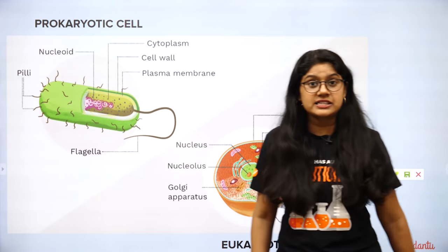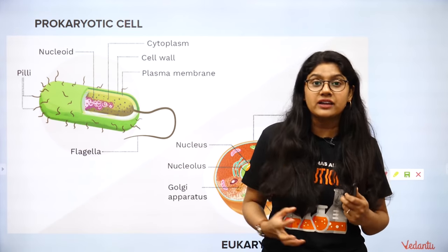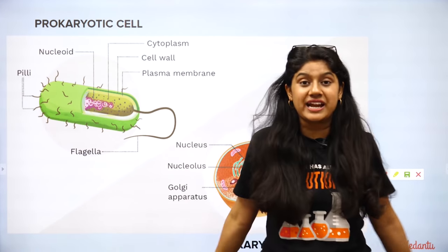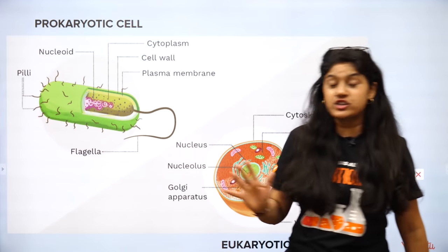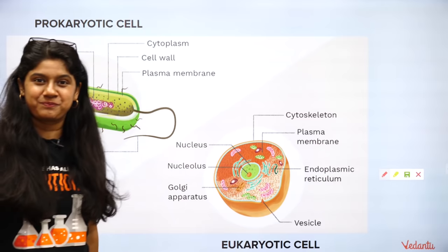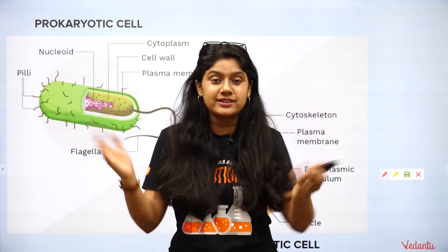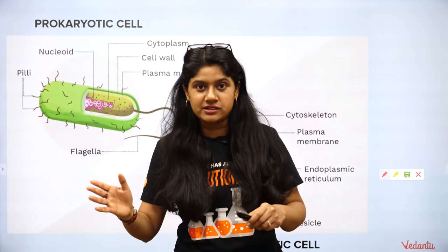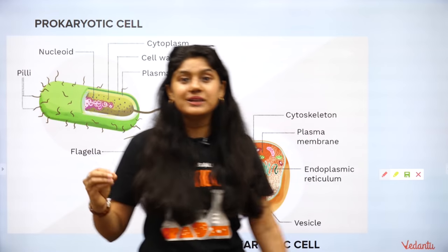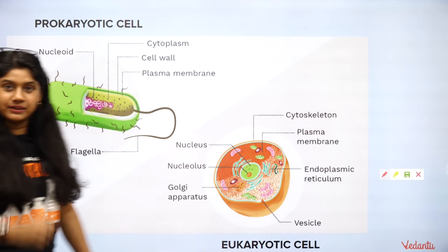We can segregate cells based on the presence of the nucleus and other organelles. The one thing by which we can differentiate plant cells, animal cells, prokaryotes, or eukaryotes is based on the presence of the nucleus and different organelles.